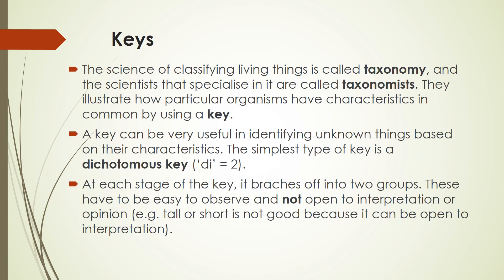The actual science of classifying living things is called taxonomy, and the scientists who specialise in it are called taxonomists. There are people who actually specialise in categorising things. They illustrate how particular organisms have characteristics in common by using a key. A key can be very useful in identifying unknown things based on their characteristics.